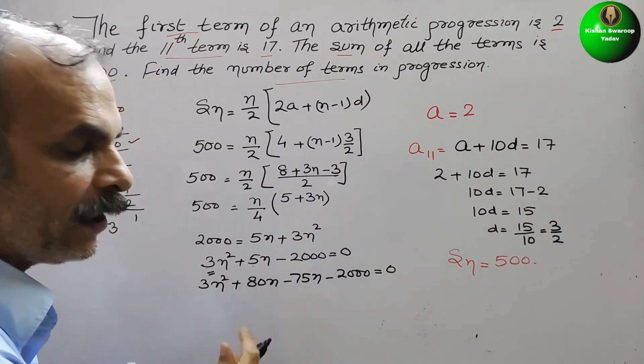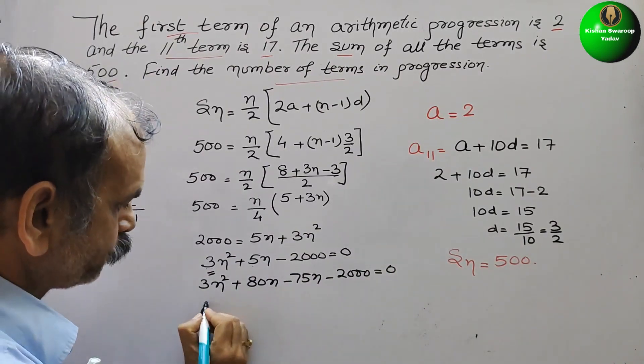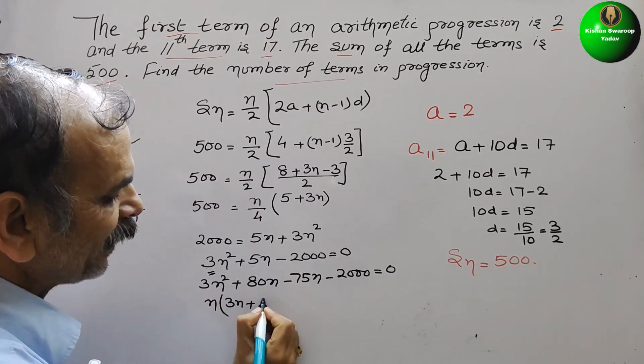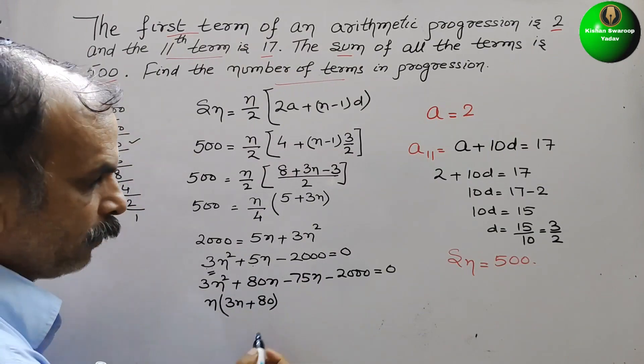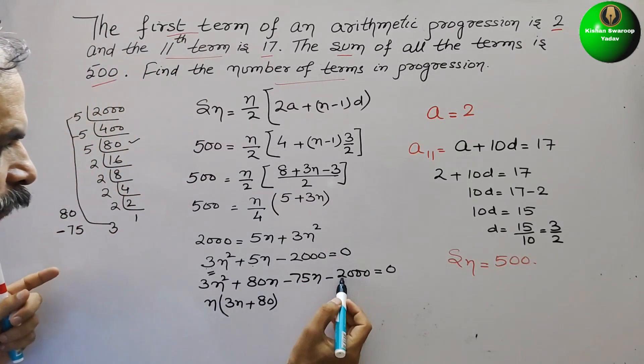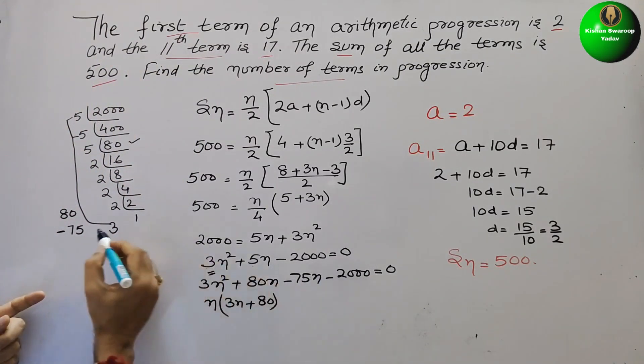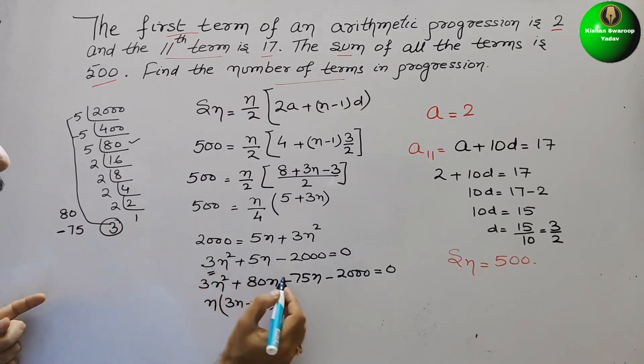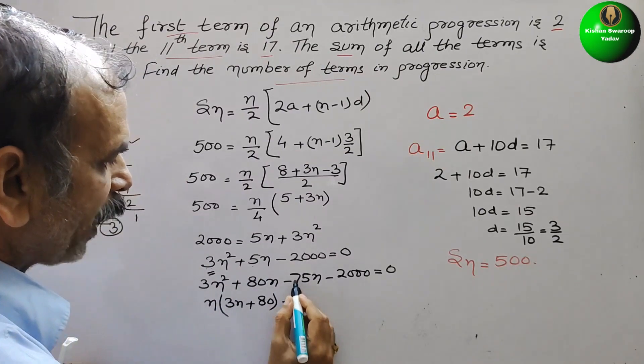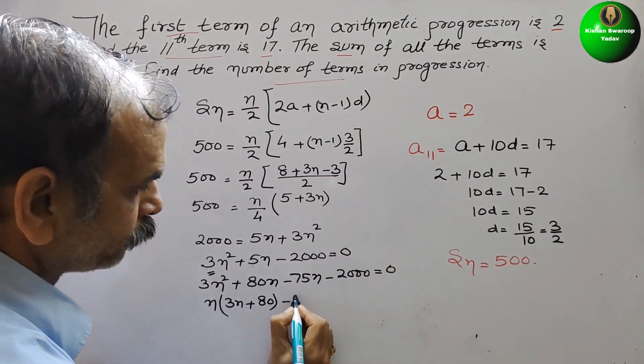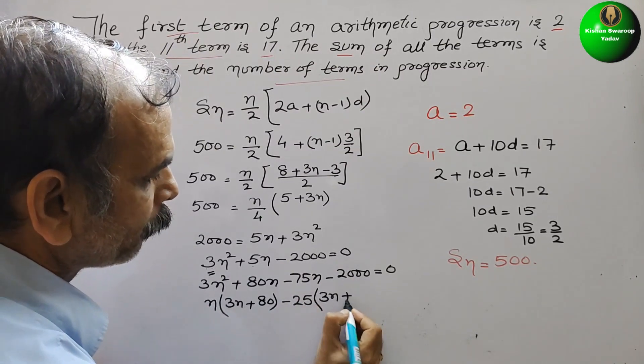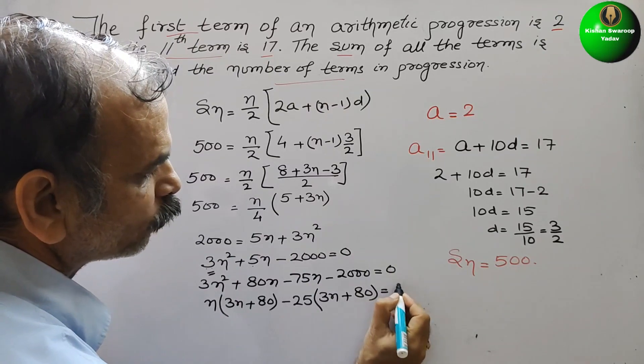In this, n is common, that we will take it out. So here it will come as 3n plus 80. And here, you can see 75, that means we can say this 3, minus 25 is common. So here you will get again 3n plus 80, that is equal to 0.